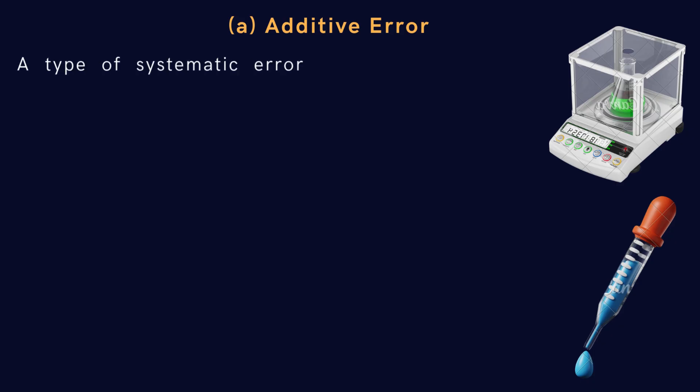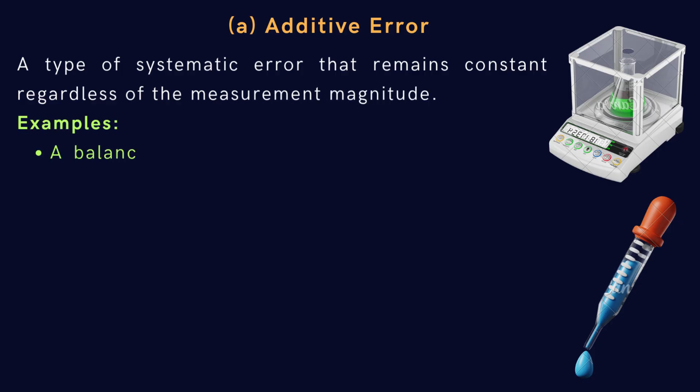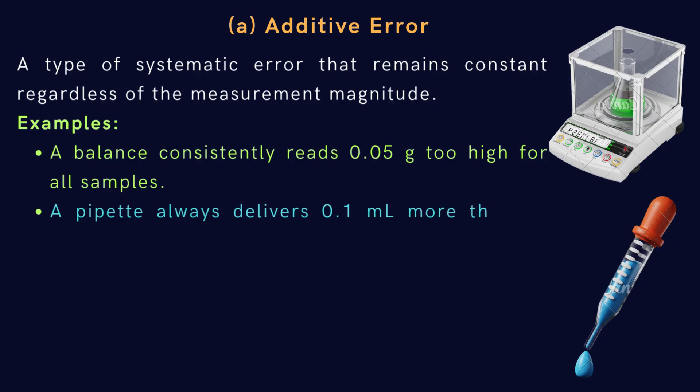Let's discuss additive error, a type of systematic error. It's a type of systematic error that remains constant regardless of the measurement magnitude. Examples: a balance consistently reads 0.05 g too high for all samples.